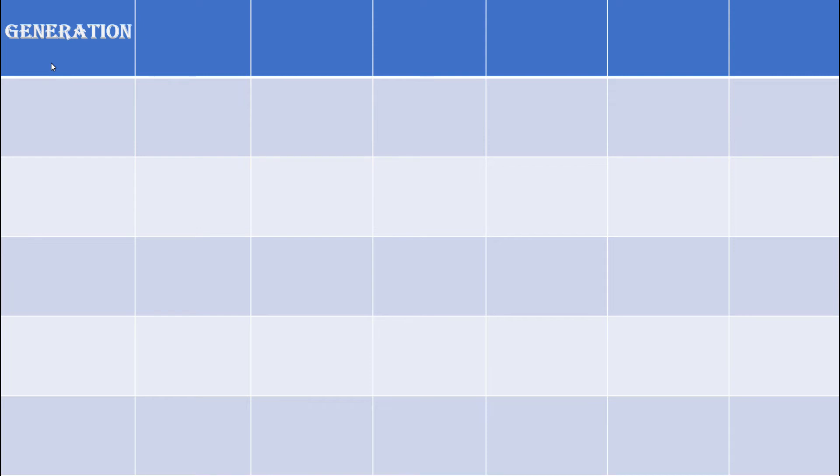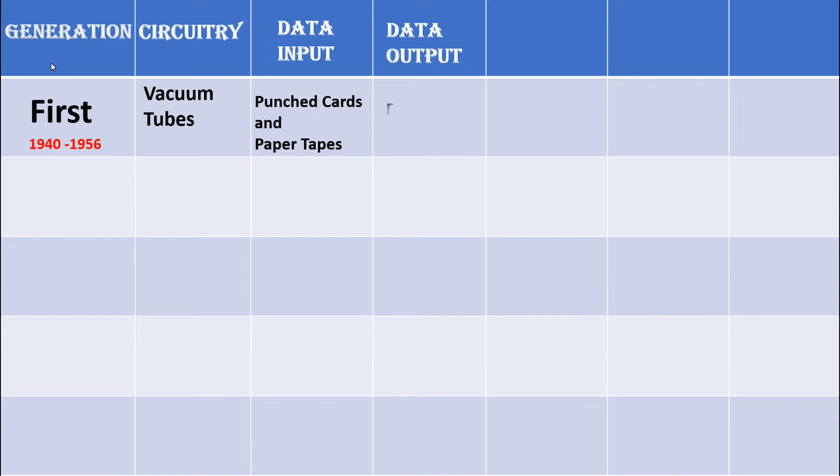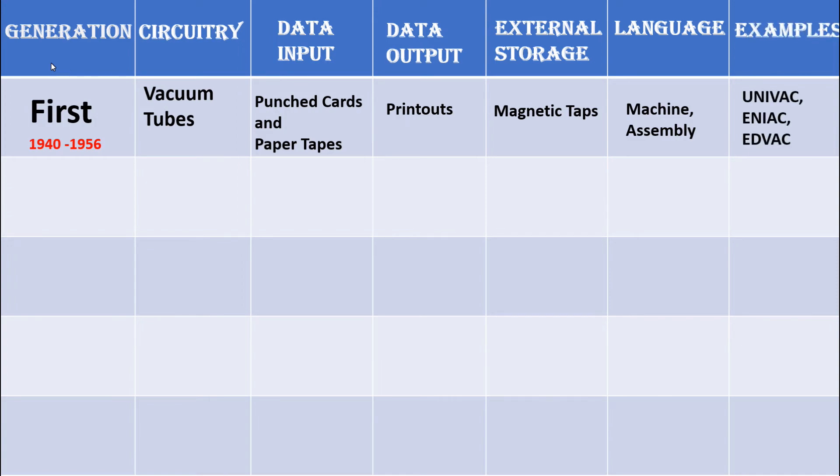generation of computers in detail. Between 1940 to 1956, first generation computers used vacuum tubes. For data input, they used punch cards and paper tapes. Systems gave output as printouts. Magnetic tapes were used as external storage devices. The languages were machine language and assembly language. Examples of computers in this generation